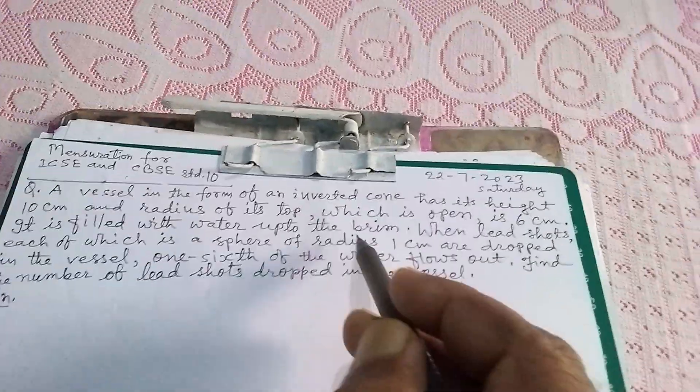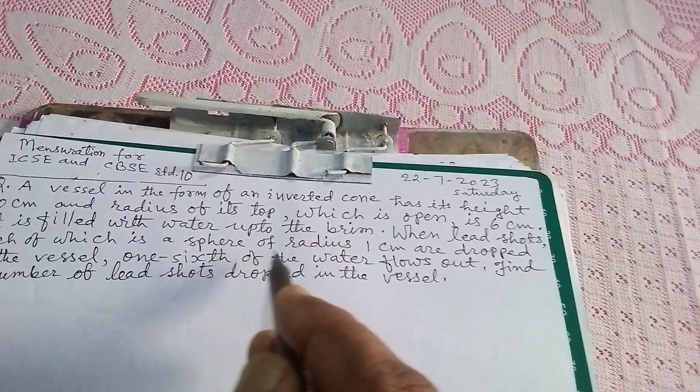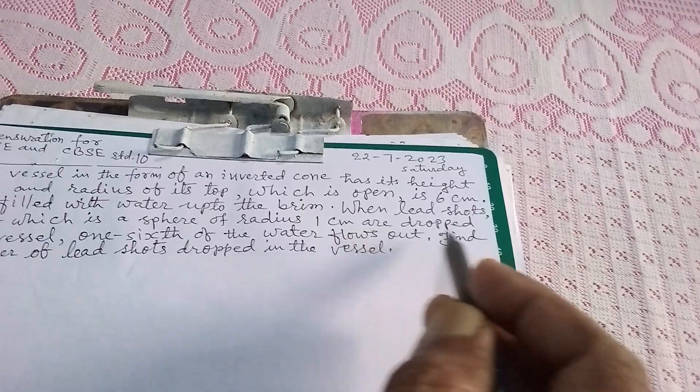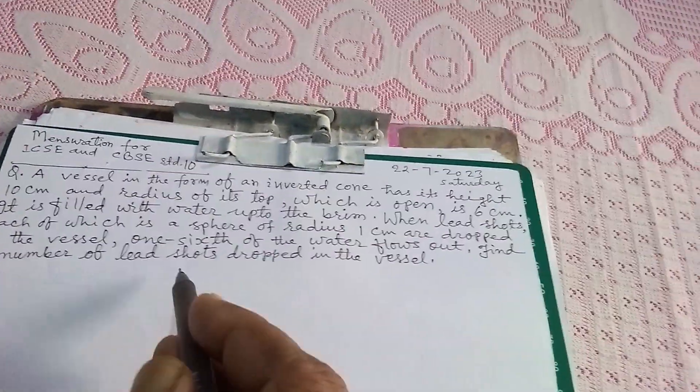It is filled with water up to the brim. When large shots, each of which is a sphere of radius 1 centimeter, are dropped in the vessel, 1/6 of the water flows out. Find the number of lead shots dropped in the vessel.